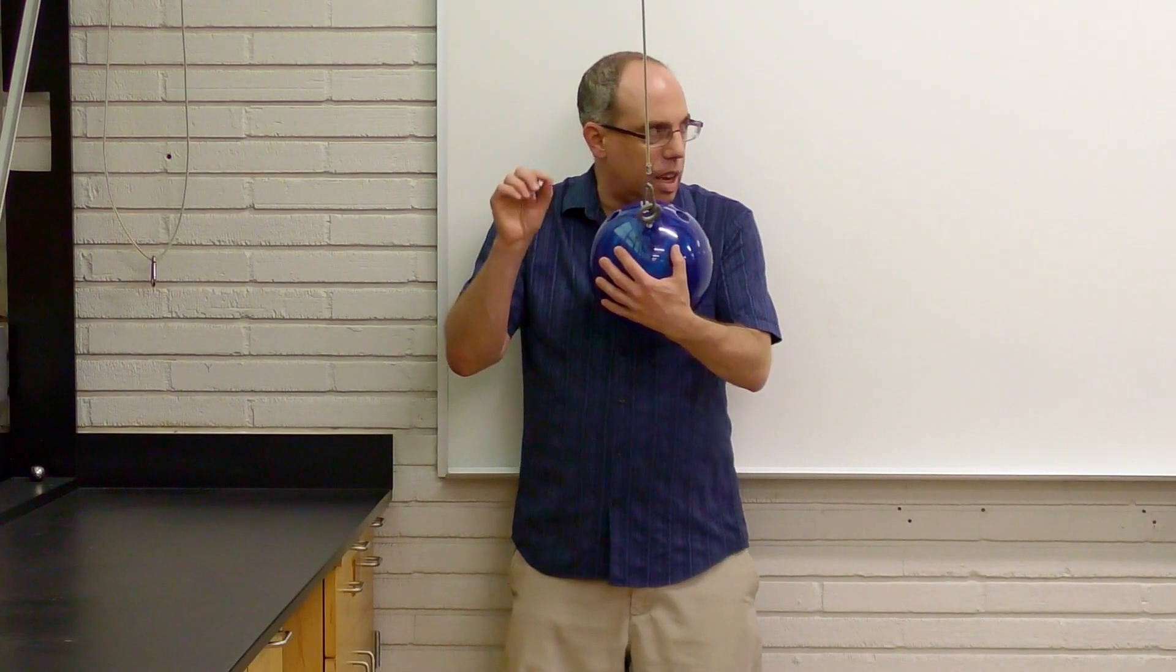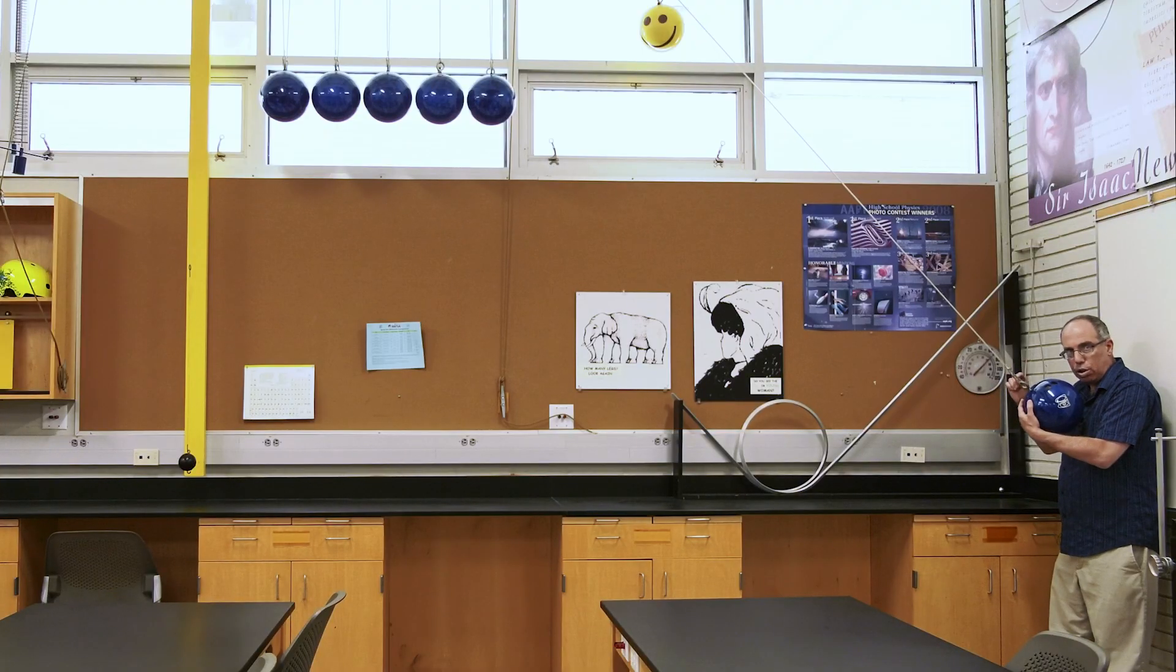If the gravitational force is conservative then the total work done around that entire path will be zero and the bowling ball will return to my chin once again with the kinetic energy of zero.